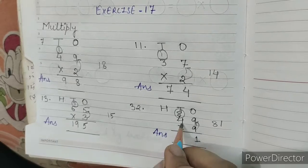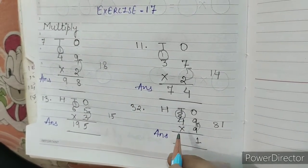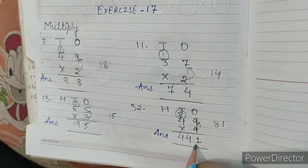4, 9s are, 9, 4s are 36. 36 plus 8, 44. Our answer is 441.